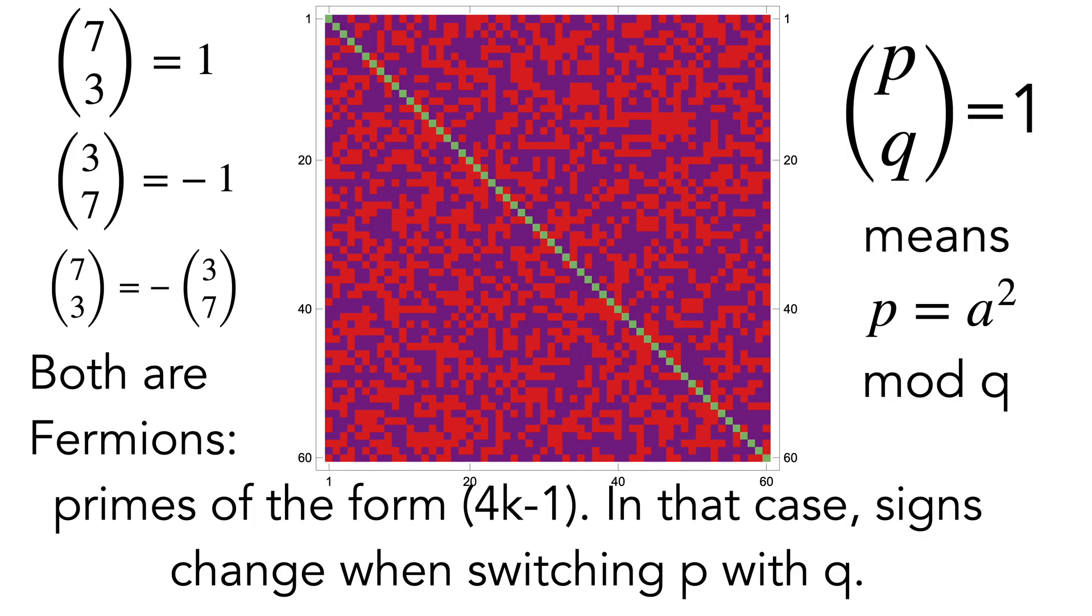So here is an example: 7 and 3 are both fermions because they are of the form 4k-1. 7 over 3 is 1 because 7 is a quadratic residue. 3 is not a quadratic residue modulo 7, cannot be written as a square, and so they have different signs.